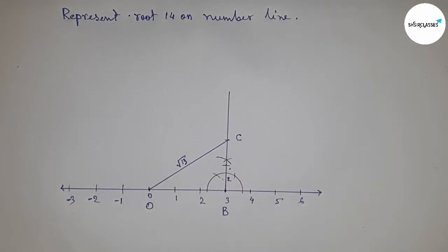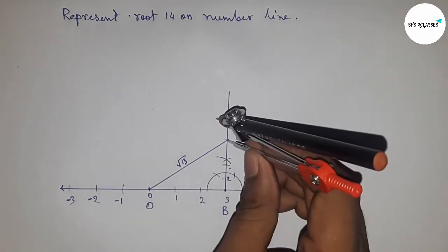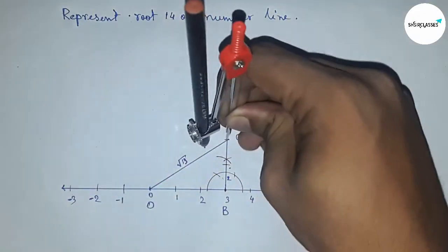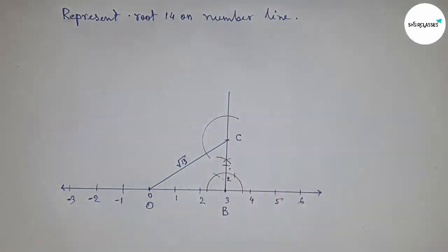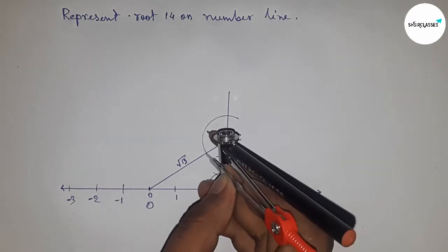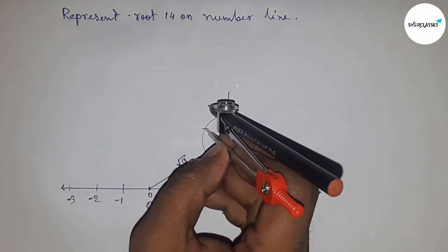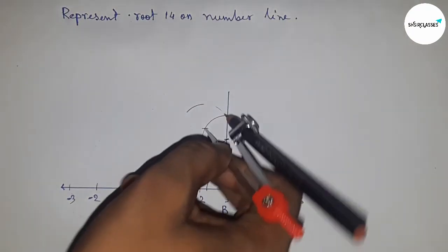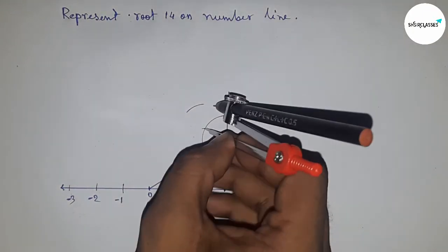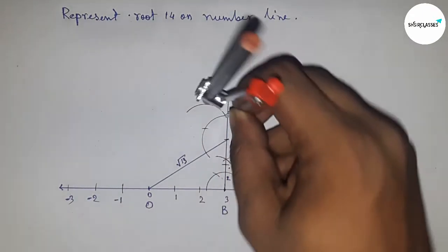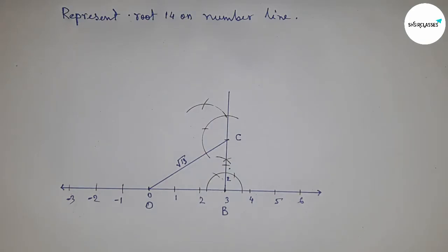Next, construct a perpendicular line or 90-degree angle at point C.